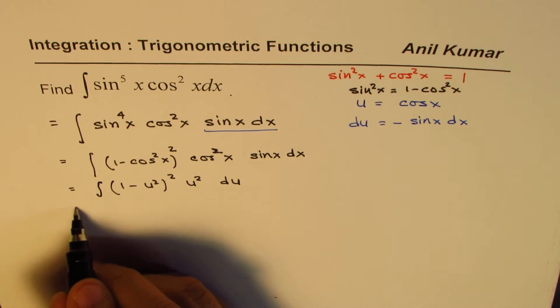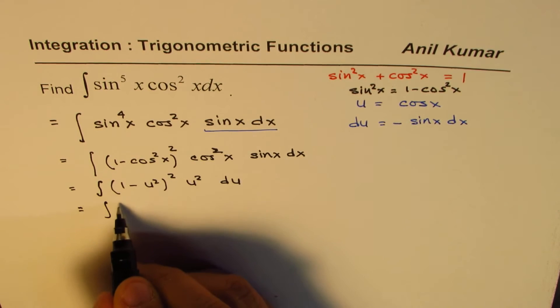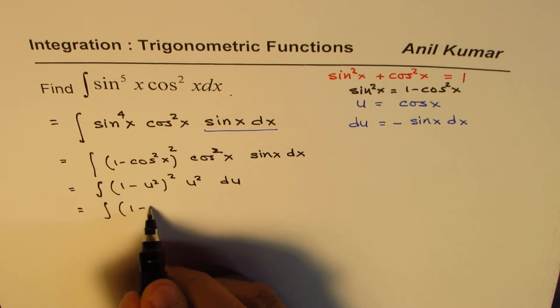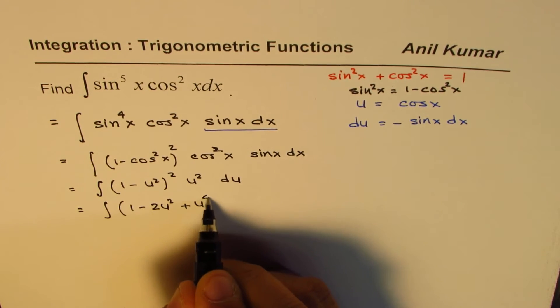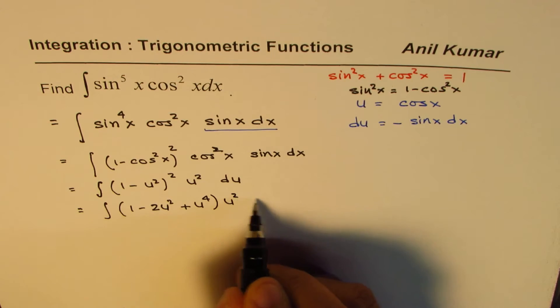Now we kind of get a polynomial to work with. So we could write this as 1 minus 2ab, which is 2u square plus u to the power of 4 times u square du.